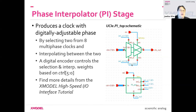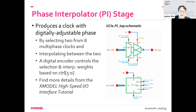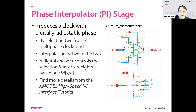The next stage is called the phase interpolator. It takes those eight multiphase clocks generated by the DLL, selects two of them, and mixes them together to produce a digitally adjustable clock phase. You take two adjacent clock phases and interplay between them to produce the middle phase.